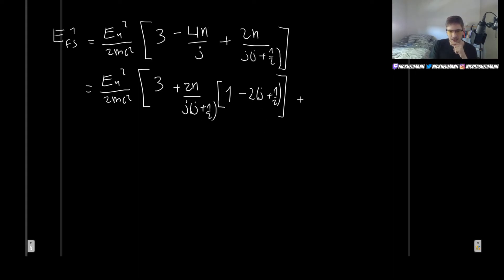So now let's multiply in here. So what do we get? Well, of course, everything in front is still the same: EN squared over 2mc squared, 3 plus 2N over J, J plus one-half. And then we have 1 minus 2J minus 1. Wait, am I correct? Yes, minus 1.